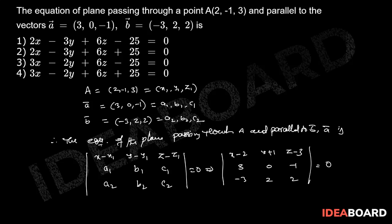That implies on simplification we get 2x minus 3y plus 6z minus 25 equals 0. The correct answer is the first option.